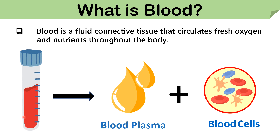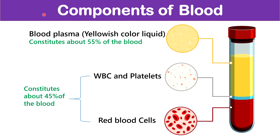Blood is a red colored liquid combined of blood plasma and blood cells. Blood plasma constitutes the liquid portion of the blood and mainly contains proteins, nutrients, glucose, and other dissolved matter. Blood cells constitute the solid portion of the blood and contain RBCs, WBCs, and platelets. Therefore, we can say that blood is a fluid connective tissue that circulates fresh oxygen and nutrients throughout the body.